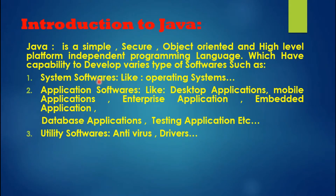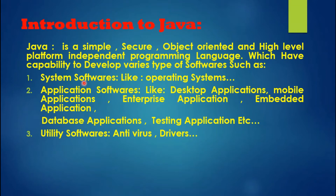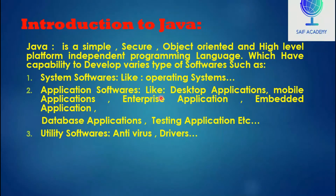We will talk about system software. System software are those software which are required to operate the system, like the operating system. Application software are those software which run over the system software.